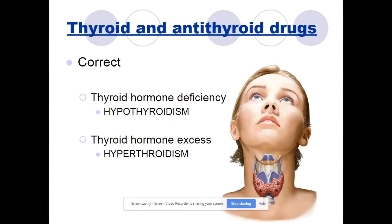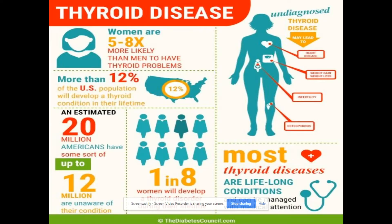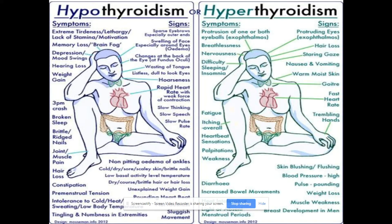Now we will discuss thyroid and antithyroid drugs. These medications correct either thyroid hormone deficiency (hypothyroidism) or thyroid hormone excess (hyperthyroidism). Women are 5 to 8 times more likely to have thyroid problems than men. If undiagnosed, thyroid disease may lead to heart disease, weight gain, infertility, or osteoporosis. Most thyroid diseases are lifelong conditions managed with medication. 20 million Americans have some sort of thyroid issue. Review the signs and symptoms of hypo- and hyperthyroidism on the slide, which will also be discussed in Med-Surg.